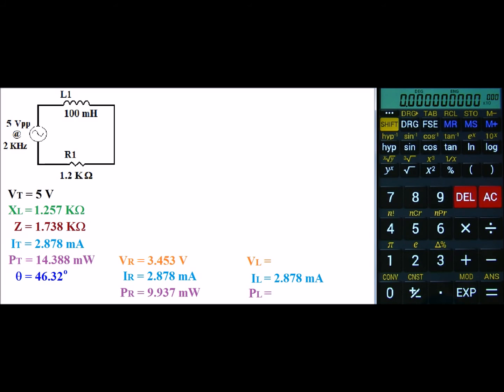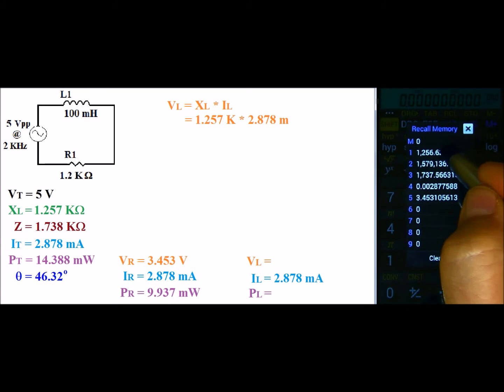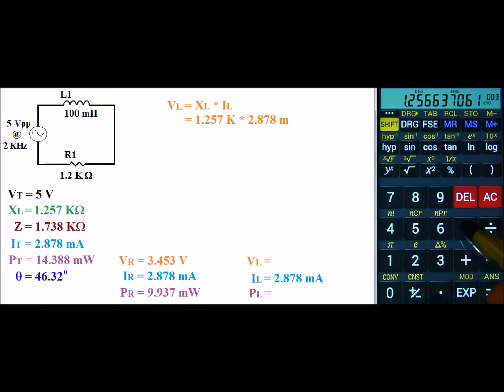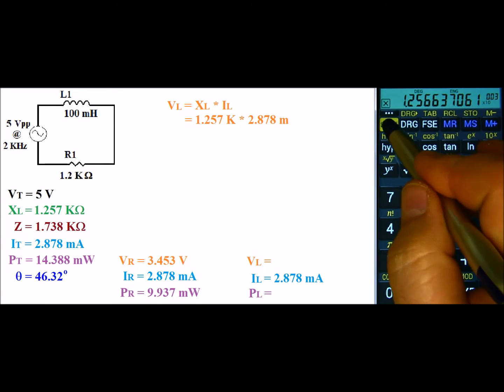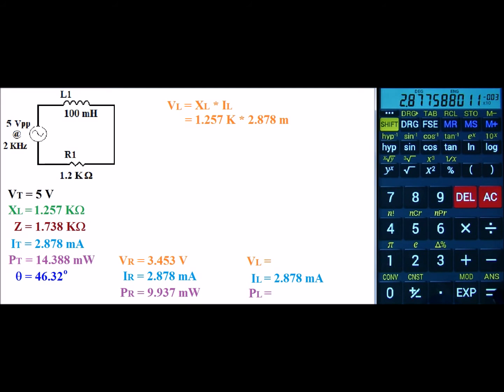First value we can find is Vl. Vl is X of L times IL. X of L is 1.257k, and IL is 2.878 milli. So with this one, I can recall my value of the inductive reactance, times my recalled value of the current. And that gives us a voltage drop of 3.616 volts.